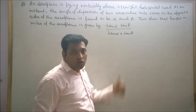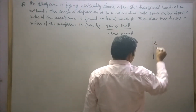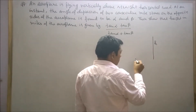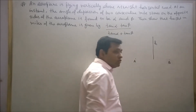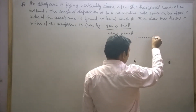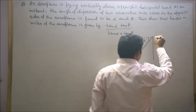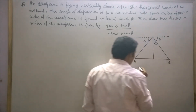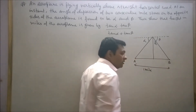First of all I will try to draw the figure of this question. Let's say this is the height of the aeroplane and the angle of depression on the opposite sides of two consecutive milestones. Let's say this is one stone A and this is another stone B. The angle of depression of stone A is alpha and the angle of depression of stone B is beta. The distance between AB is 1 mile since these are consecutive milestones.